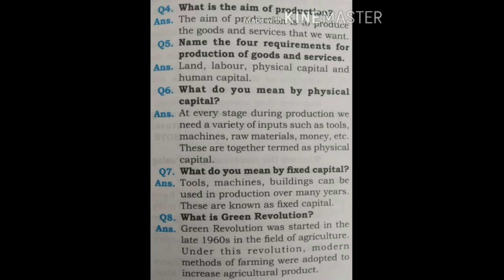Question 5: Name the four requirements for production of goods and services. Land, labour, physical capital and human capital. Question 6: What do you mean by physical capital? At every stage during production we need a variety of inputs such as tools, machines, raw materials, money, etc. These are together termed as physical capital.